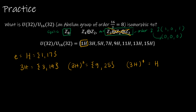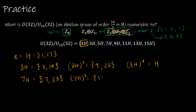Let's check another element — 7H={7,23}. Then (7H)² has 7²=49≡17 mod 32, and 23²=529≡1 mod 32, giving us {17,1}=H. So the element 7H has order 2.